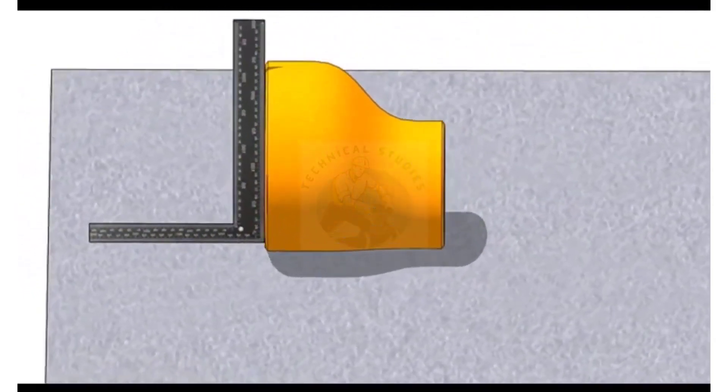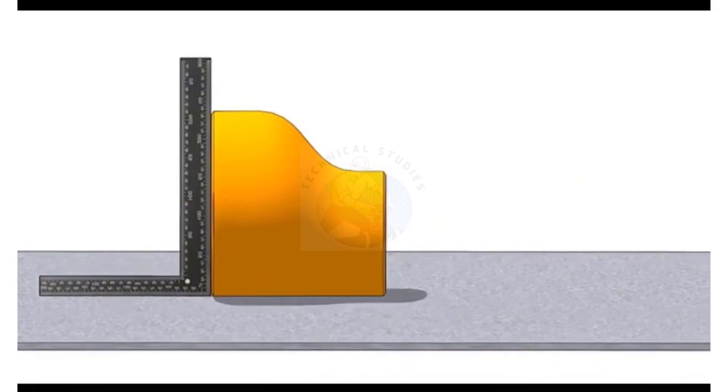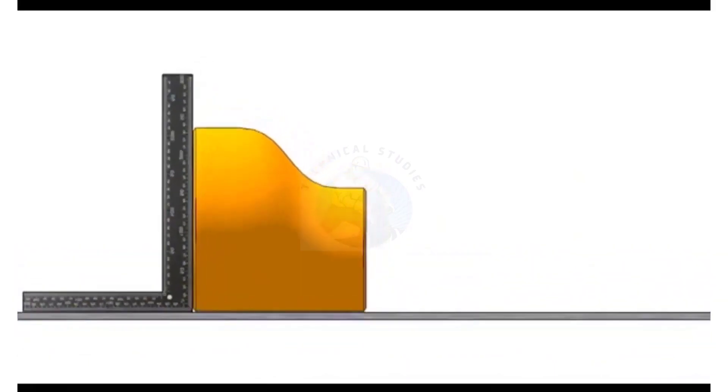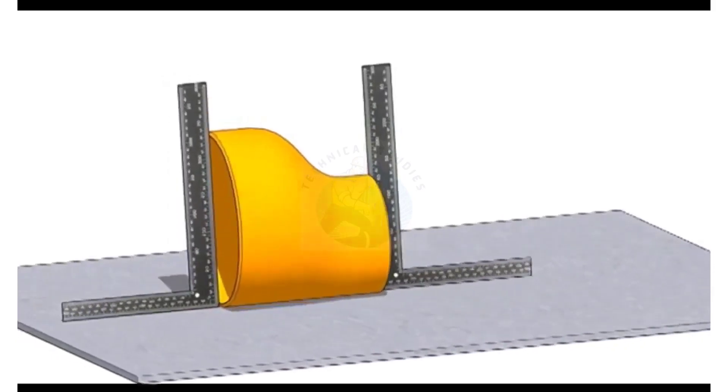Hold a right angle on the large side of the reducer as shown. Roll the reducer back and forth until the face of the reducer touches the right angle properly. Now check the other end with another right angle. If the right angle touches the face properly, the reducer is almost okay.